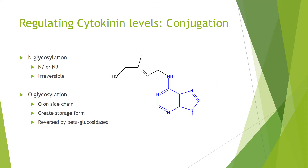You can also change the activity of cytokinin by adding groups onto various functional groups. For example, N-glycosylation on N7 or N9 is considered irreversible — no reversing enzyme has been discovered yet. You can also glycosylate the oxygen group on the isoprene unit, which creates a storage form — the glycosylated cytokinin can then be deglycosylated by glucosidases to revert it back to its active state.